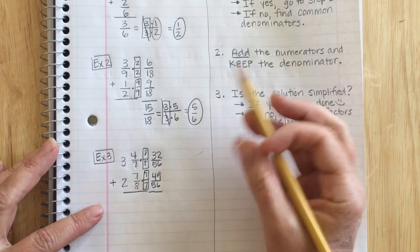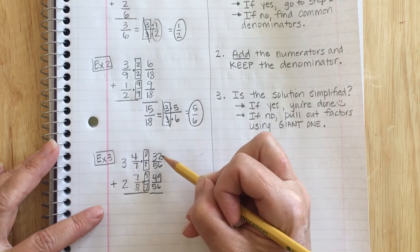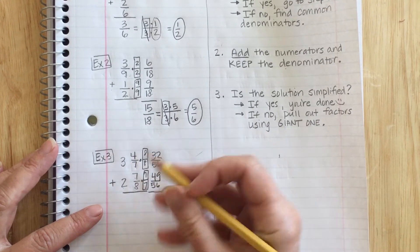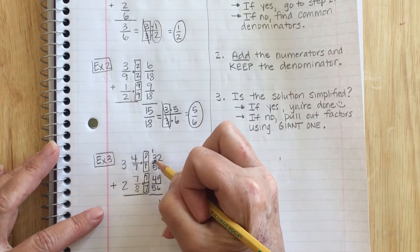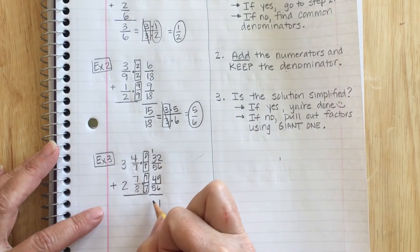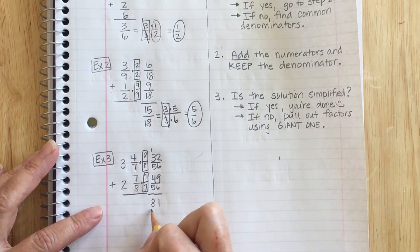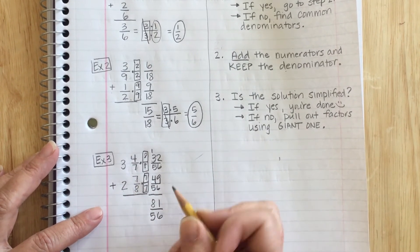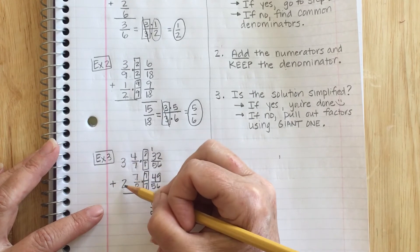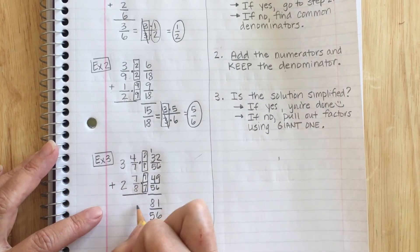So now step 2, I'm going to add my numerators. I've got a 2 plus a 9, which is 11. I'm going to carry my 1. 1 plus 3 is 4 plus another 4 is 8. Now I keep my denominator, which was 56. And I have to remember, I still have whole numbers over here to add. 3 plus 2 is 5.